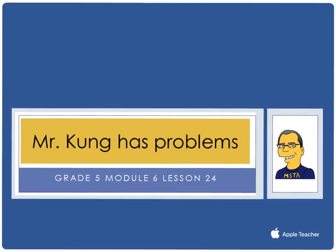Hello, and welcome to another episode of Mr. Kung Has Problems. Tonight at grade 5 in module 6 in lesson number 24, we are doing the same thing we've been doing for the last few lessons. We are making sense of complex, multi-step problems, and we are persevering in solving them. There is really one major problem in tonight's homework, so I'm going to do that problem with you.